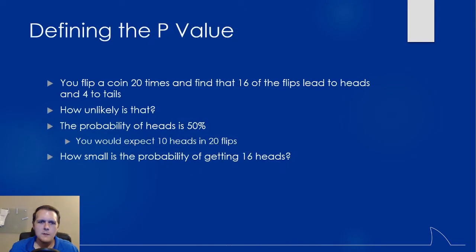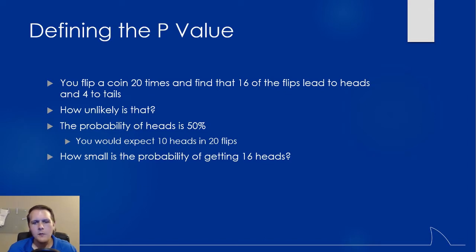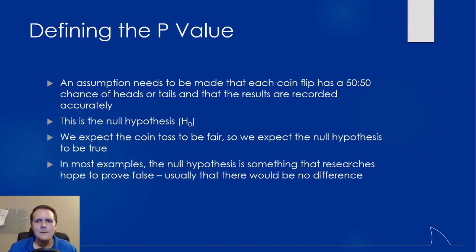Let's define what the p-value is. Say you were to flip a coin 20 times and found that 16 of the flips led to heads and 4 to tails. How likely is it that that would have occurred? You would expect the probability of getting heads is 50%, so you'd expect that 10 out of 20 flips would be heads and 10 would be tails. How small is that probability of actually getting 16 heads? The assumption must be made that the coin is balanced — a 50-50 chance of getting heads or tails.